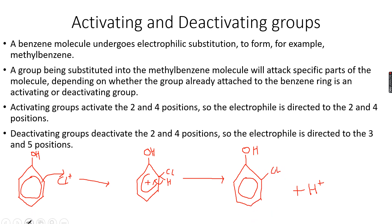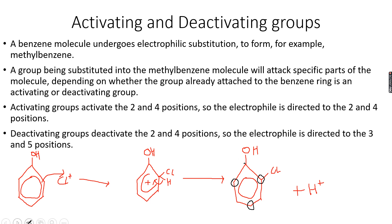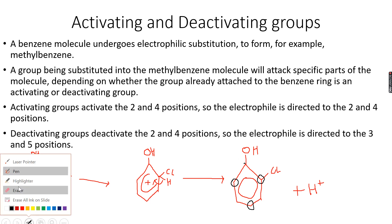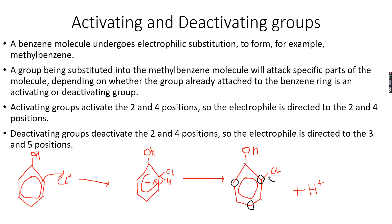The only thing is that the Cl can attach either here, or here, or here. These two positions are basically the same because they are the same distance from the carbon atom, but this one is at the far end. So now I can have isomers of this compound — what if instead of the two position, I had my chlorine at the four position?